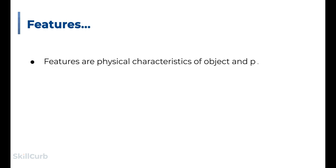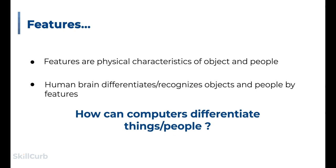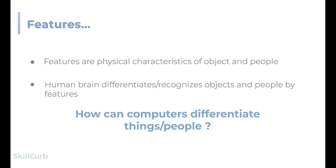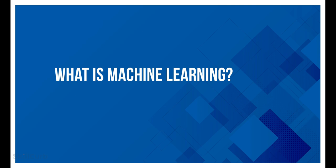When we see a person or an object, we subconsciously observe their features and tell them apart. But the question remains: how can a computer perform such tasks? The answer to this question is through machine learning. So let us see what machine learning actually is.